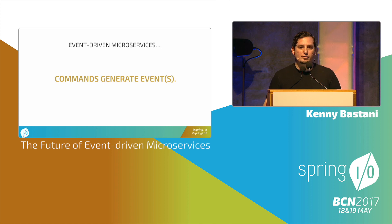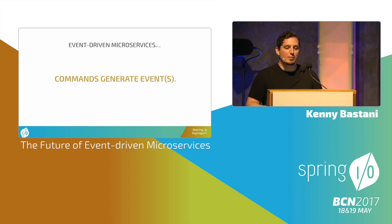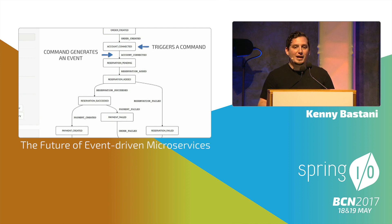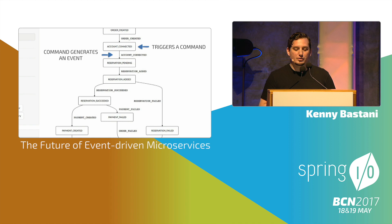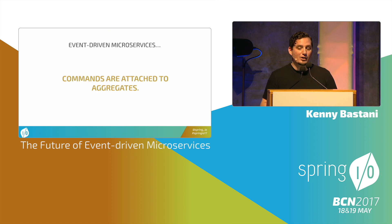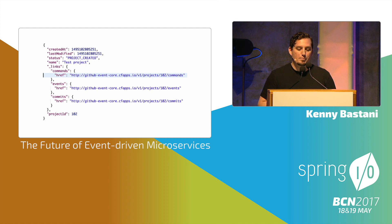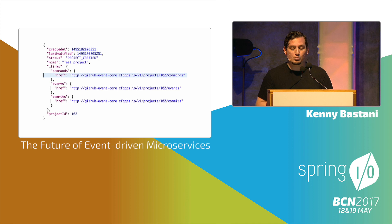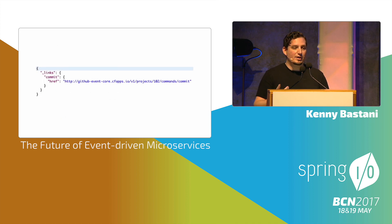Commands are going to generate events and be attached to an aggregate. For the account connected event handler, it triggers a command on the aggregate, and then the command generates an event — this is what creates the workflow of going between different states. Each one of these boxes is an event handler; each one of the arrows is an event. You can also attach commands to aggregates, just like the event log. It becomes a very simple process for developers to understand how to interact with these aggregates via REST API — they can traverse to the commands to see what's available.